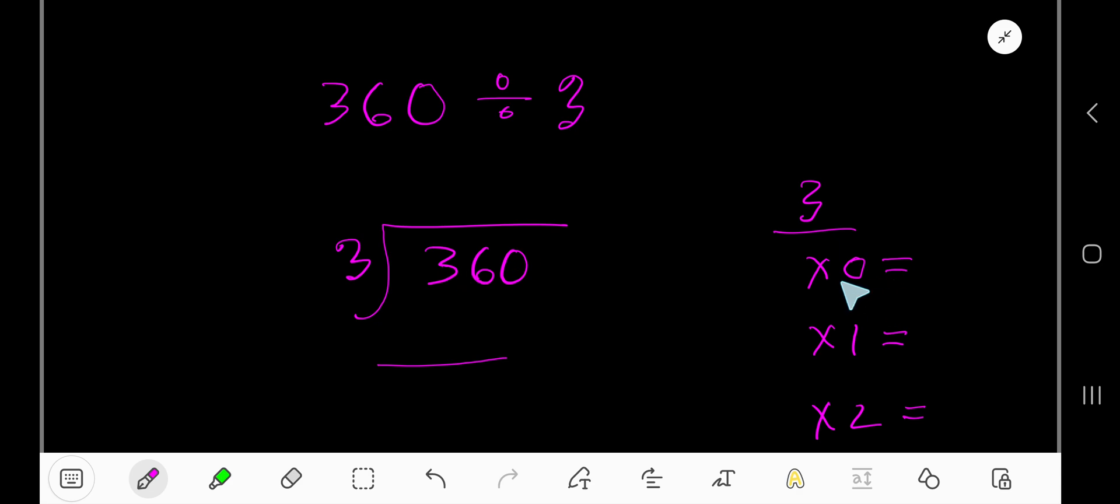Let me give you some idea about the multiplication table of 3. 3 times 0 is 0. 3 times 1, just add 3 with the previous step. 0 plus 3 equals 3.